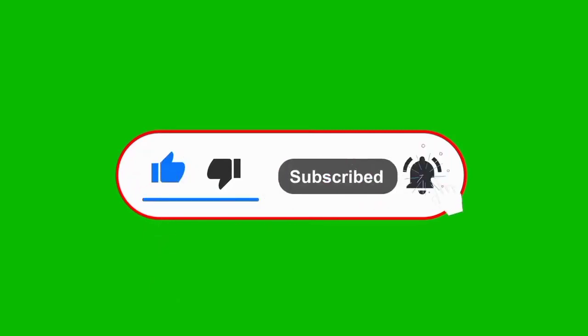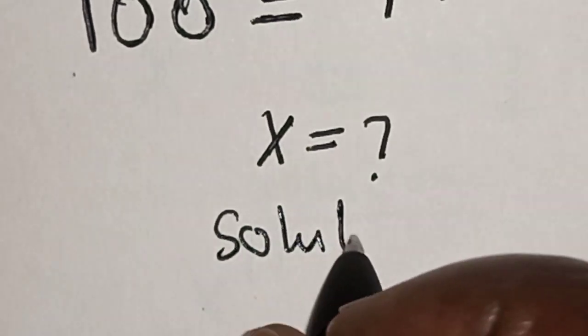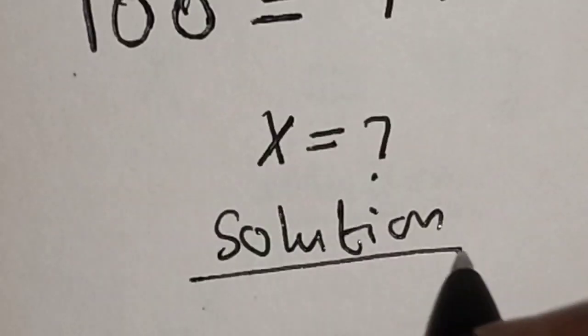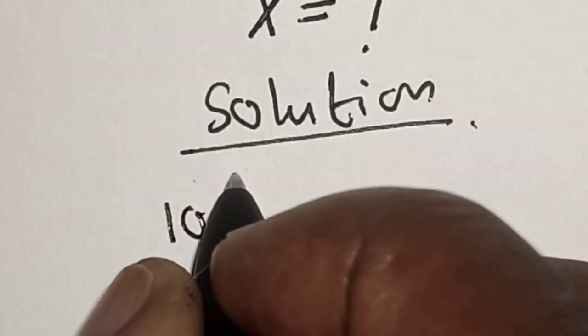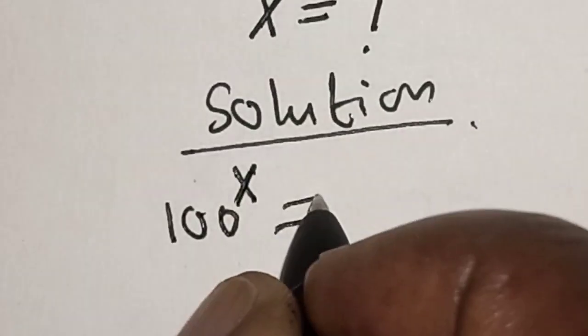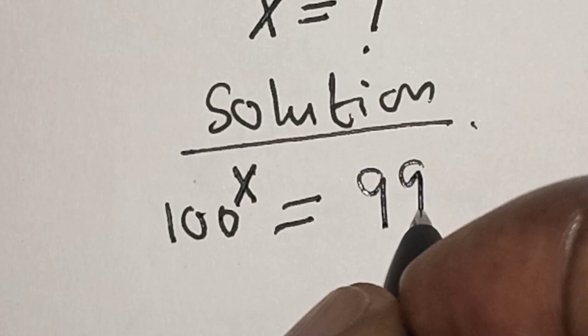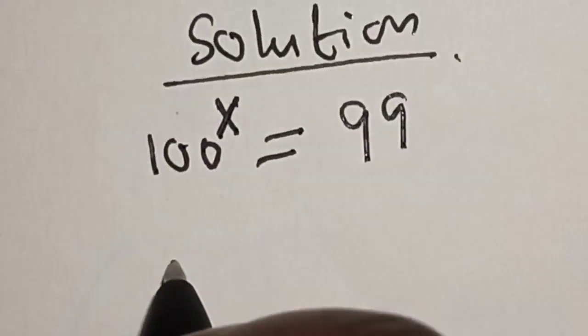Solution. We have the given equation: 100 raised to power x is equal to 99. Then let's take the log of both sides.